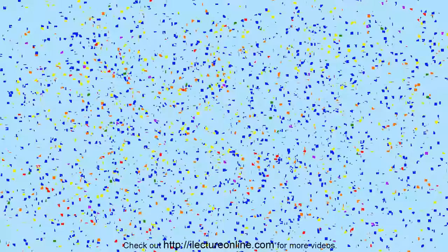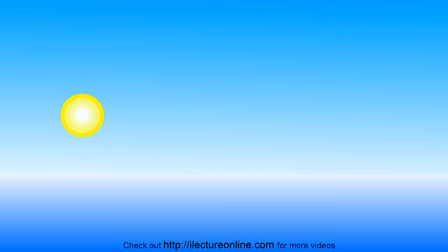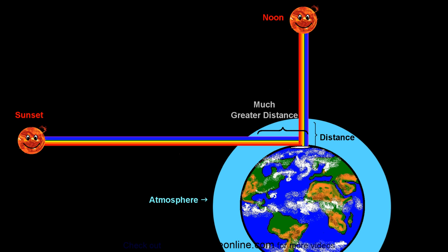In the evening or in the morning when the sun is much lower to the horizon, and the sunlight must travel through a much greater distance through the atmosphere. A greater proportion of the red and orange light is then scattered out, and the sky takes on a different color,